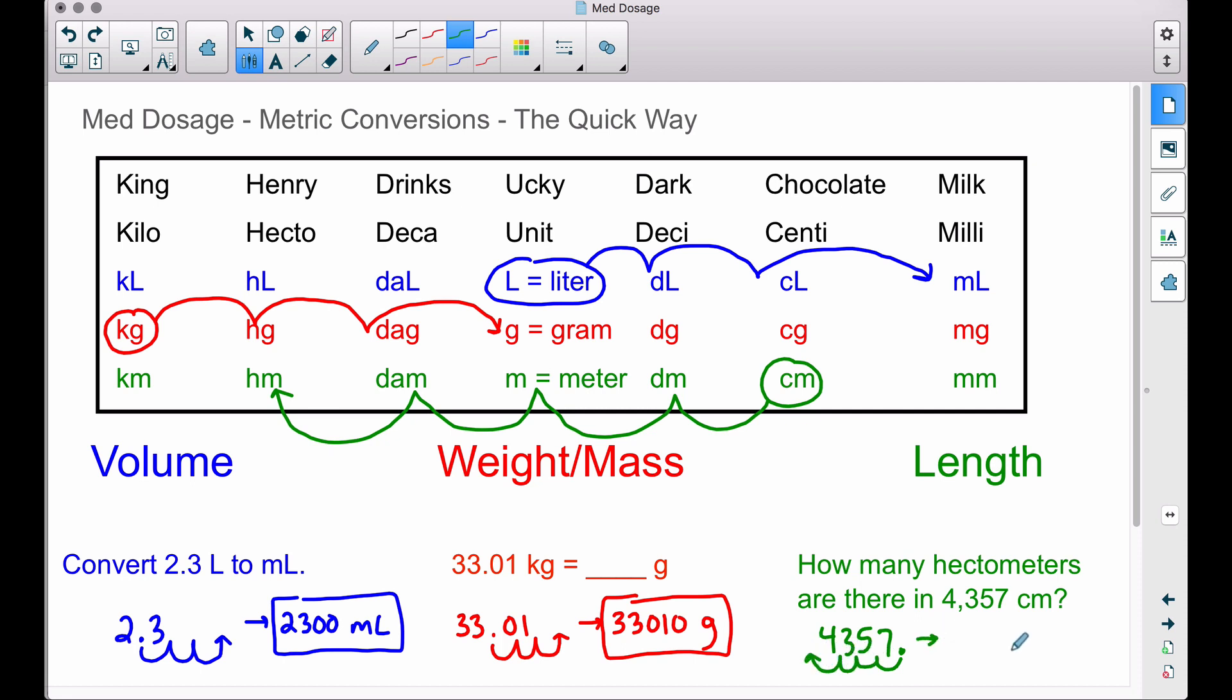Therefore we have point four three five seven hectometers. And it's good practice to put a zero out in front of that decimal, that way you do not overlook that decimal that is in that particular number. And there you have it, med dosage, the quick way of doing metric conversions.